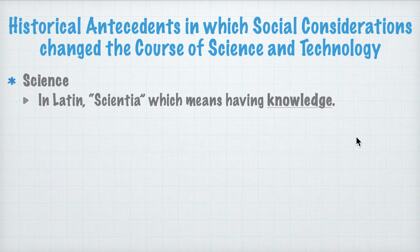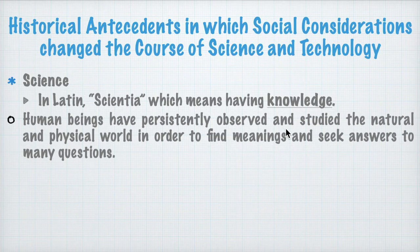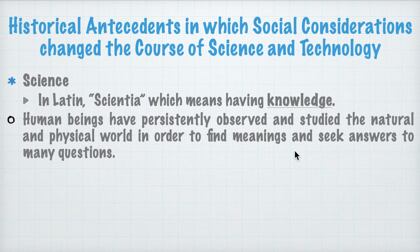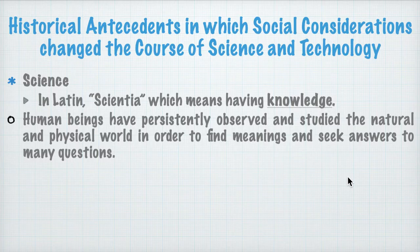We know that human beings have persistently observed and studied the natural and physical world — our earth — in order to answer questions and find meanings for themselves, for our world, and in the whole universe in general. So practically, science is having knowledge, acquiring knowledge, in order for us to find meanings and have answers to our questions. But how can we apply that knowledge? So when we apply the science we know of, we call that technology.